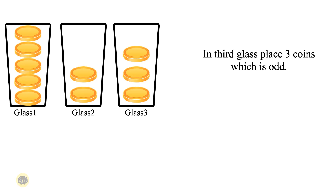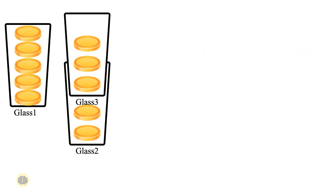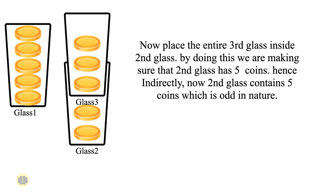The first glass contains 5 coins (odd), the second glass contains 2 coins (even), and the third glass contains 3 coins (odd). Now comes the important step: place the entire third glass inside the second glass. By doing this, the second glass now indirectly contains 5 coins, which is odd in nature.